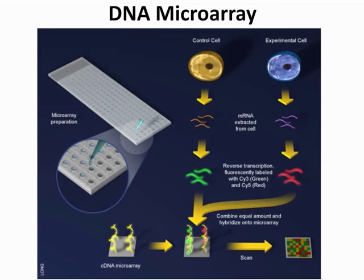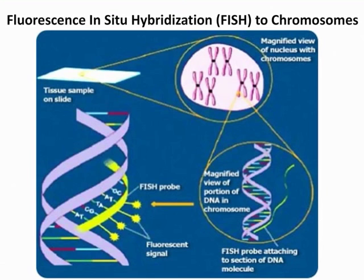Still part of learning objective five is knowing DNA microarray — go ahead and watch the video, as it will be much easier to understand. Another technique is fluorescence in-situ hybridization, otherwise known as FISH. Click the interactive tutorial link for an explanation of this technique.